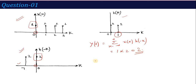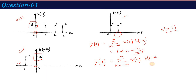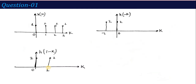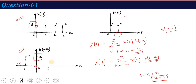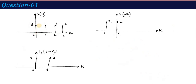For Y(1), n equals 1, so we need h(1 minus k). Starting from h(minus k), I shift by 1, so the value that was at minus 1 moves to 0, and the value at 0 moves to 1. This gives h(1 minus k). Multiplying X(k) with h(1 minus k): at k equals 0, 1 times 2 equals 2; at k equals 1, 1 times 2 equals 2. So Y(1) equals 4.